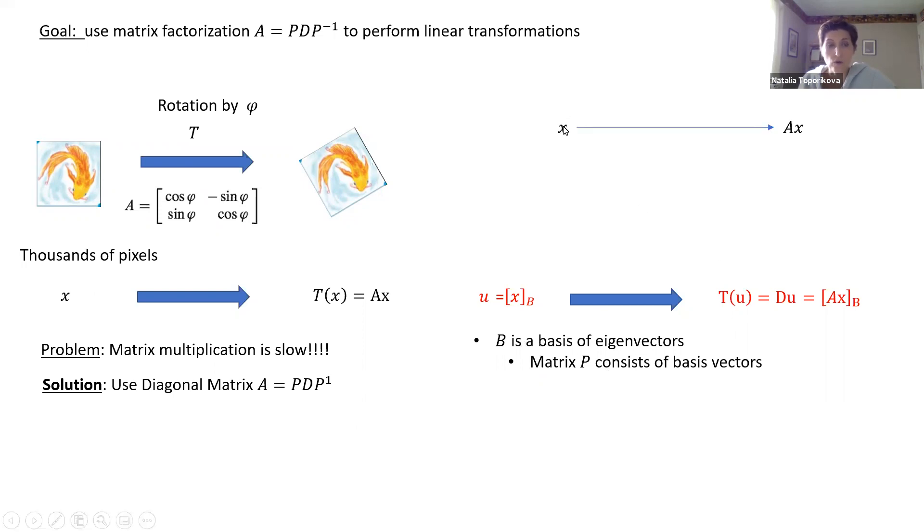So instead of going from transformation from X to AX, we first convert our X into the new basis by multiplying by inverse of P. Then we're finally carrying out the transformation itself by multiplying by the diagonal matrix D. And finally, we get our image in that basis B, which we convert to the desirable image by multiplying by the matrix P.